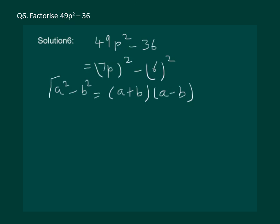Hence, applying this identity, we will get 7p minus 6 into 7p plus 6 as the required factors of 49p square minus 36. Thanks.